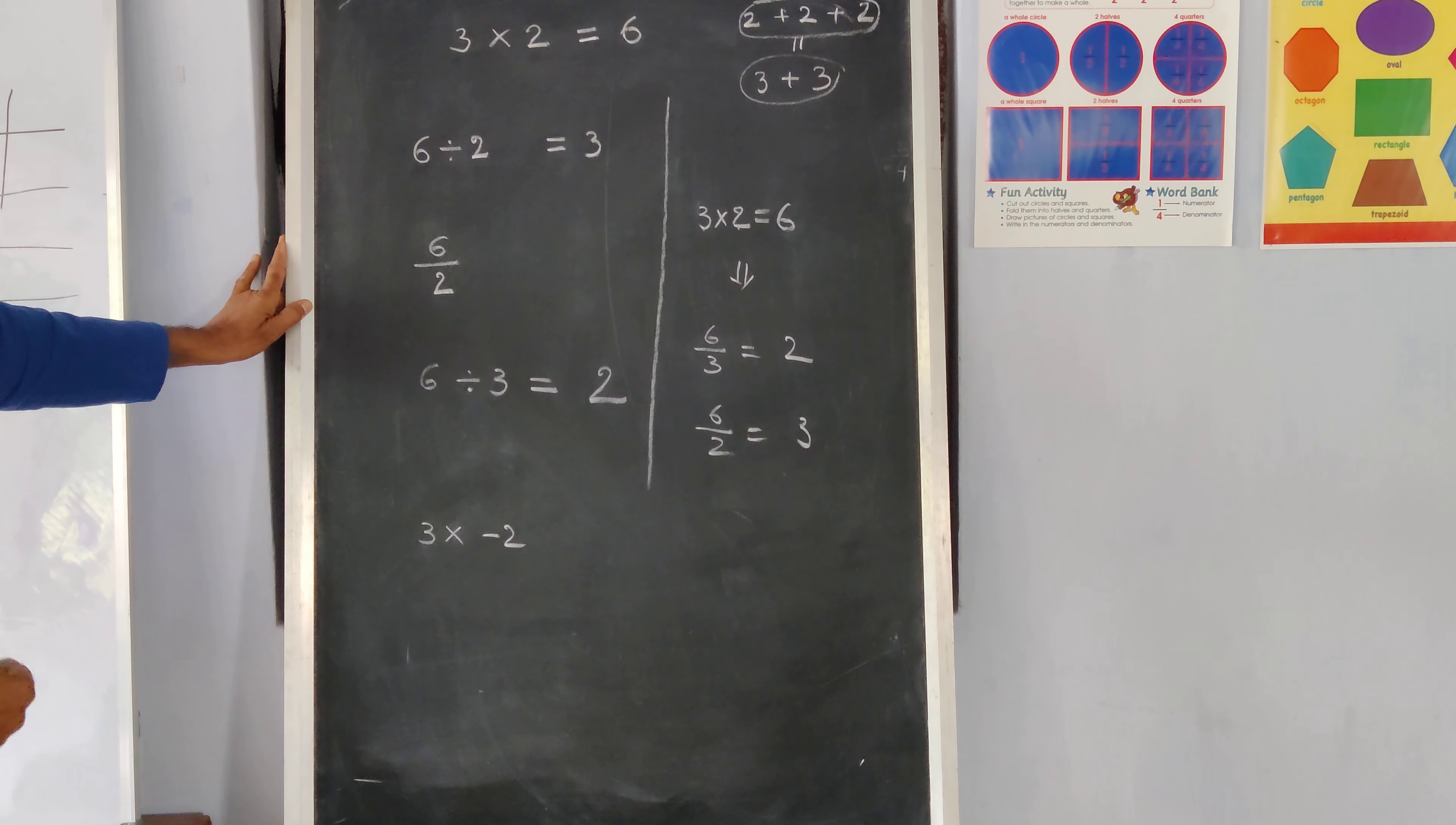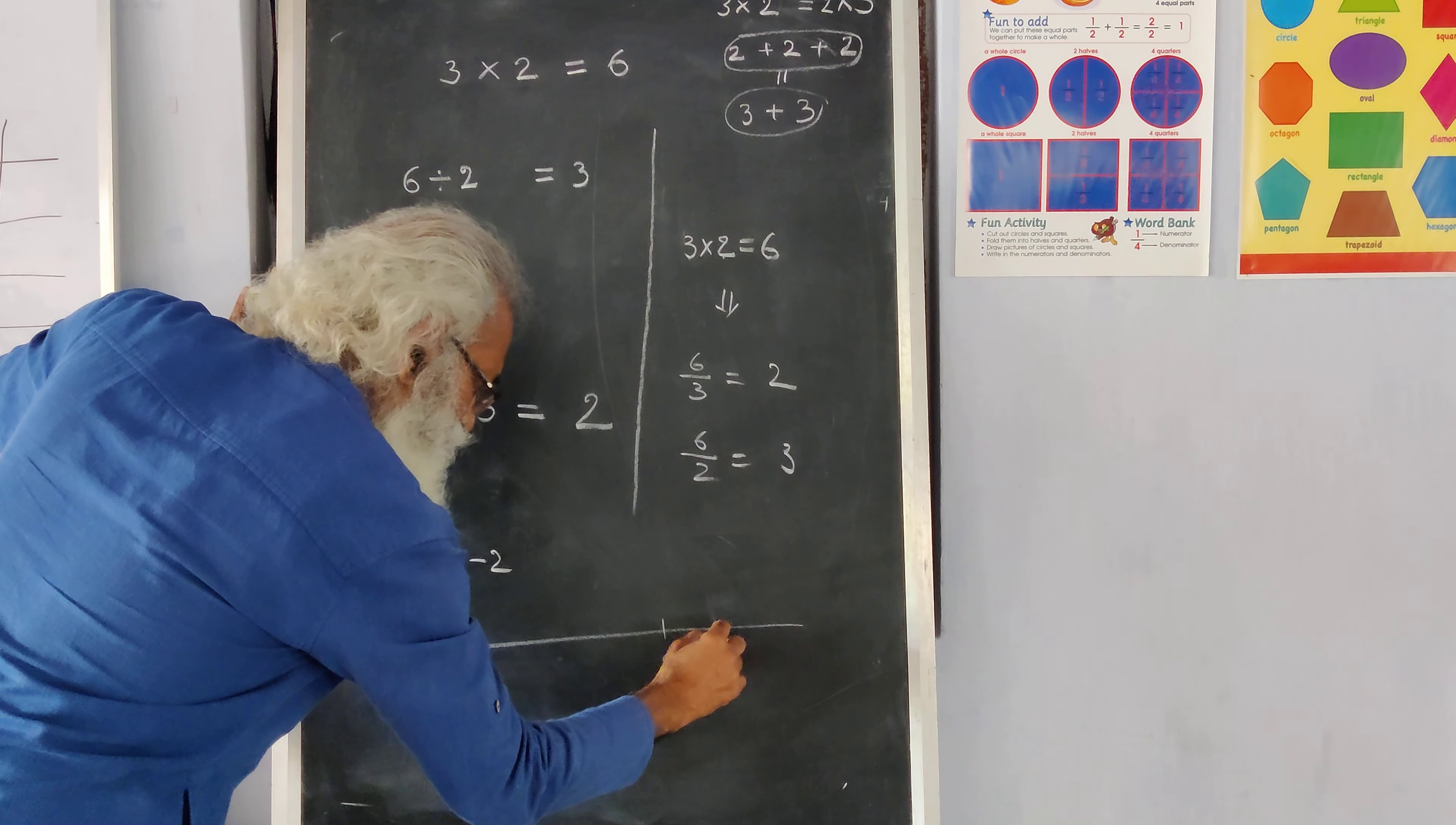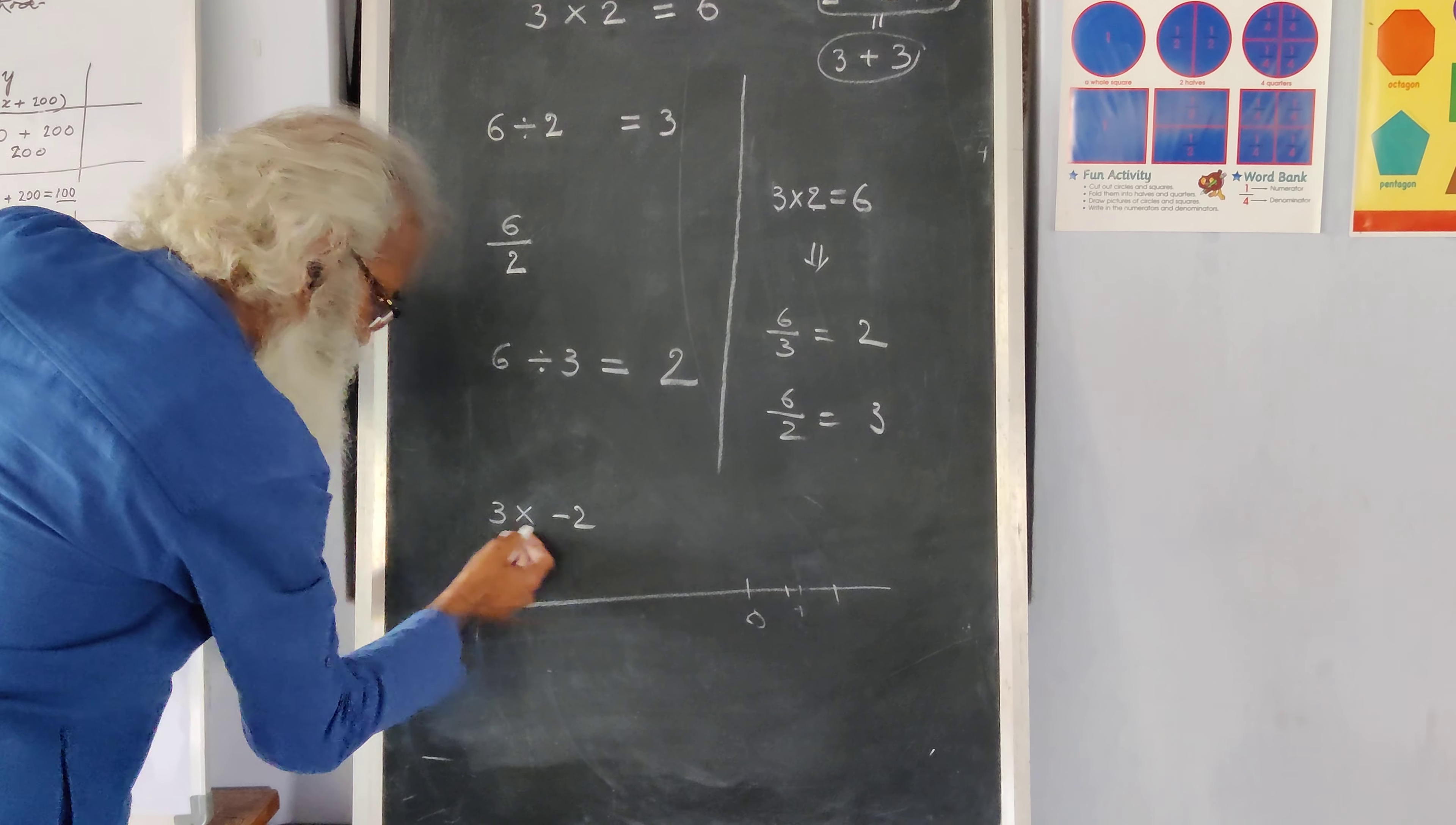Here we use the number line concept pattern. The number line is like this. That is 0. On this side, there are positive numbers, plus 1 and plus 2 and so on. On this side, minus 2 numbers.